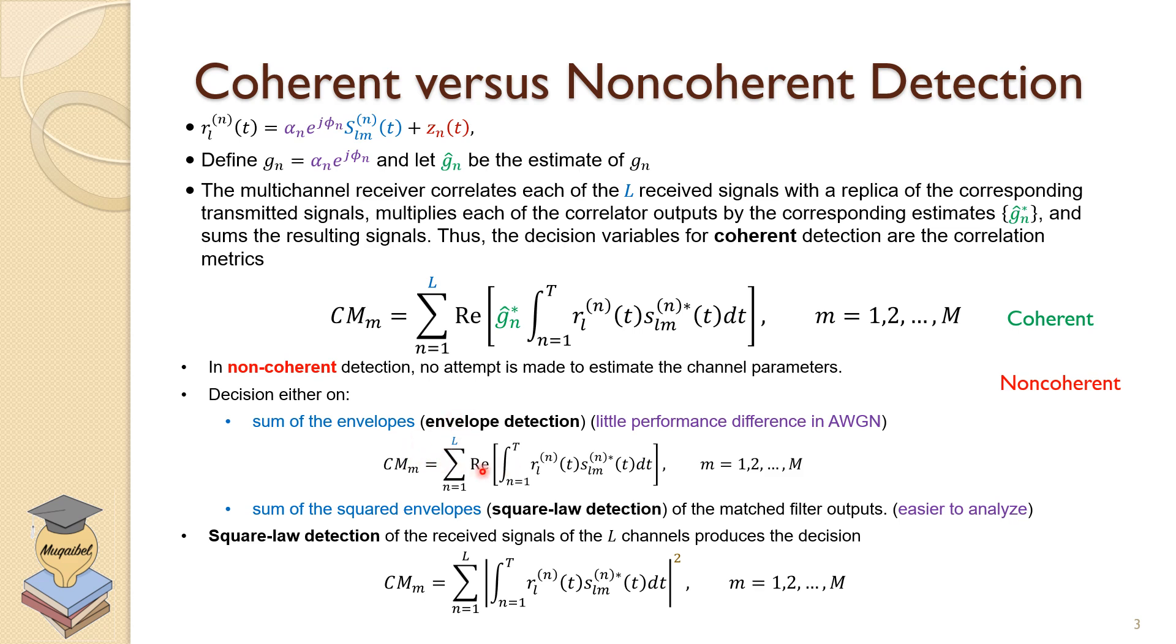Alternatively, we can square and sum, and that's called the sum of squared envelopes. So what is the difference between the two in terms of performance? And of course, you can see here that we are squaring, and this is why I call it the square law detector. This is easier in implementation. You can use diode or what have you.